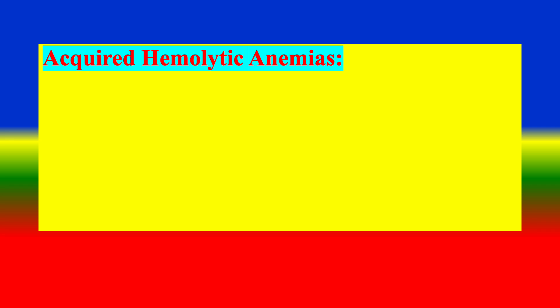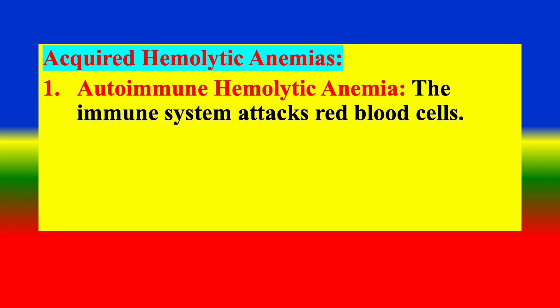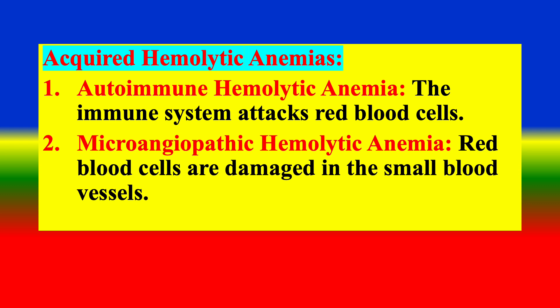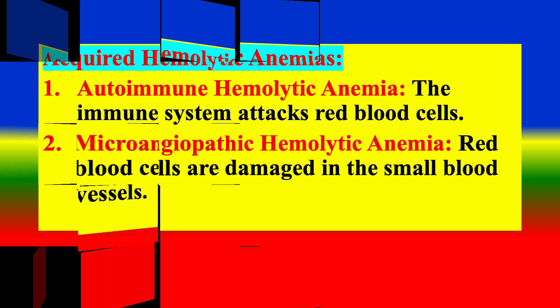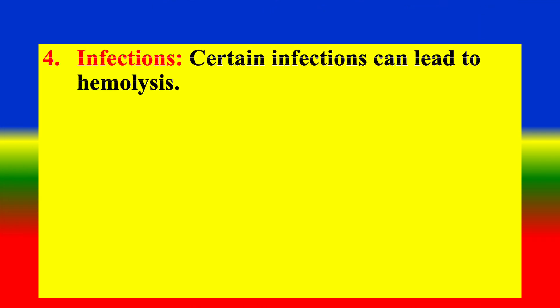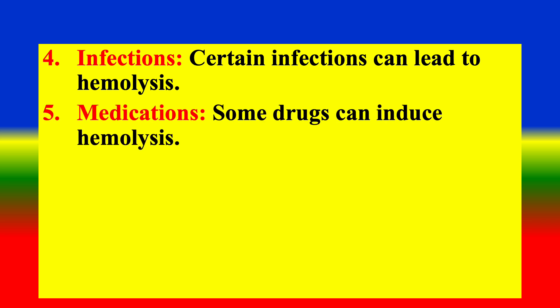Acquired hemolytic anemia includes: (1) Autoimmune hemolytic anemia — the immune system attacks red blood cells. (2) Microangiopathic hemolytic anemia — red blood cells are damaged in the small blood vessels. (3) Infections — certain infections can lead to hemolysis. (4) Medications — some drugs can induce hemolysis.